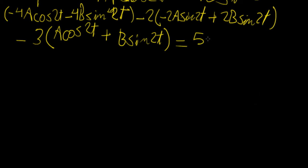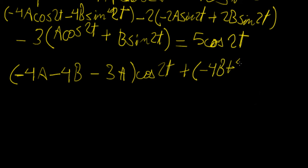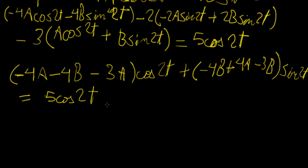And all of that is going to equal 5·cos(2t). Now we expand and simplify. Factoring and grouping the cosine and sine terms, we get: (−4A + 2B − 3A)·cos(2t) plus (−4B − 2A − 3B)·sin(2t) equals 5·cos(2t). We write the right-hand side as 5·cos(2t) plus 0·sin(2t) so that we can match up the cosine terms together and the sine terms together.